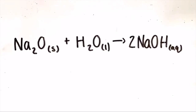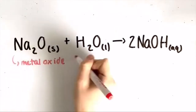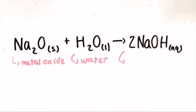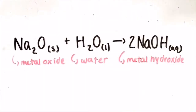Firstly, a metal oxide plus water yields a metal hydroxide. For example, sodium oxide plus water yields sodium hydroxide. The metal oxide is sodium oxide, and H2O is the water, and it yields sodium hydroxide, which is the metal hydroxide.